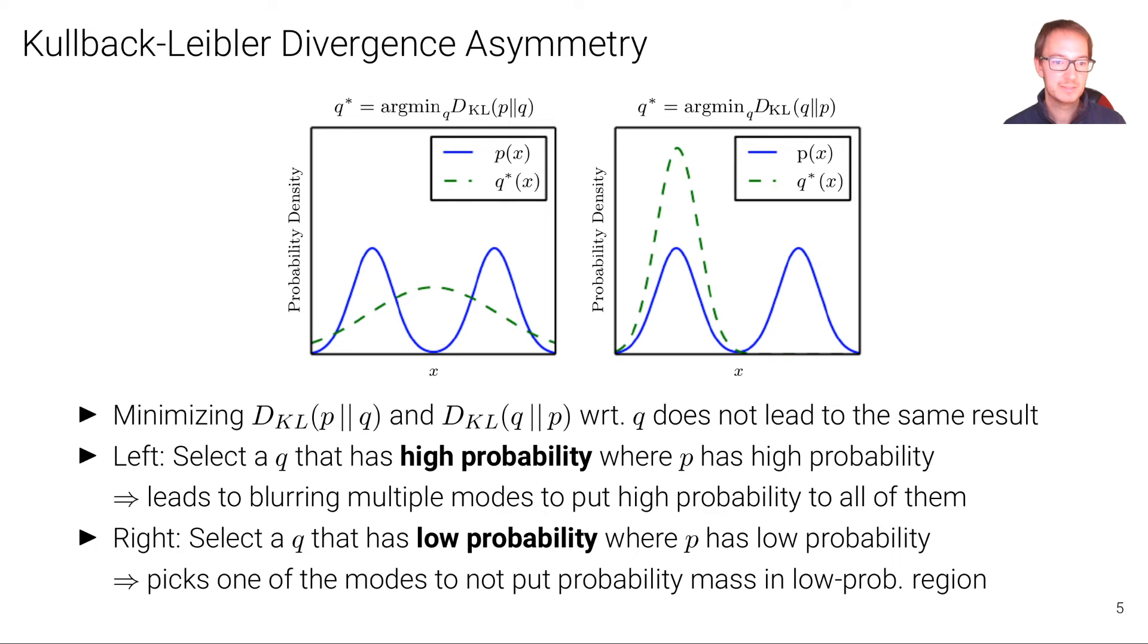And this manifests itself also here, where we can look at this asymmetry a bit more explicitly. Again, we observe that minimizing, in this case, we're trying to minimize the divergence P and Q or Q and P with respect to Q does not lead to the same result. So what we're trying to do here is now we're given the distribution in blue. That's fixed. That's an input. We call that P. And it's the same here on the left and on the right.